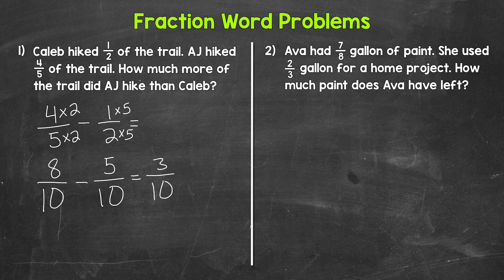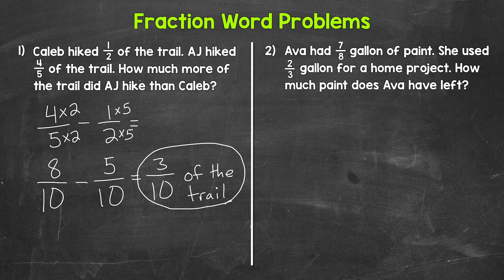So our answer is three tenths. To answer the question, how much more of the trail did A.J. hike than Caleb? Three tenths of the trail. Now three tenths is in simplest form, so we do not need to simplify here.